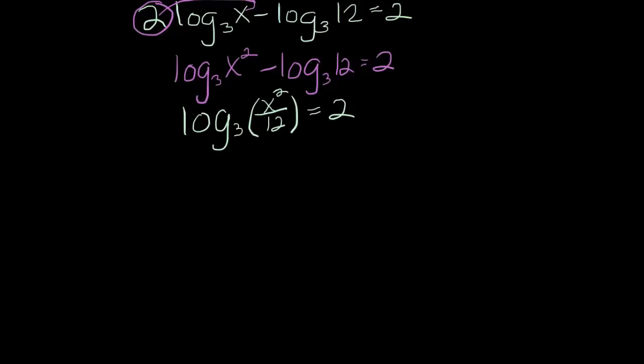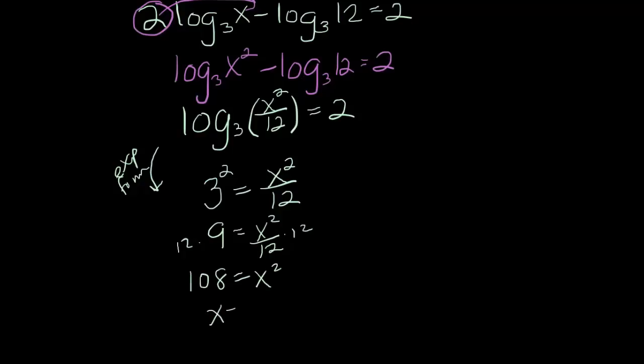This step, notice we're in log form. This next step, I'm going to go into exponential form. Because, remember that log and exponential equations are the inverses of each other. So that gets me 3 squared equals x squared over 12. Okay, that means I have 9 equals x squared over 12. Multiply both sides by 12. We get 108 equals x squared. So x equals plus and minus the square root of 108.